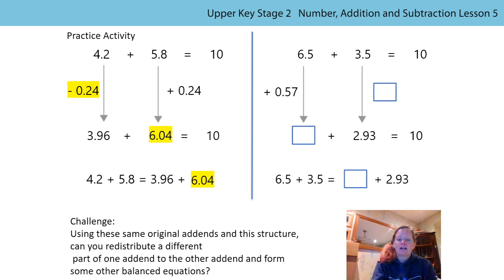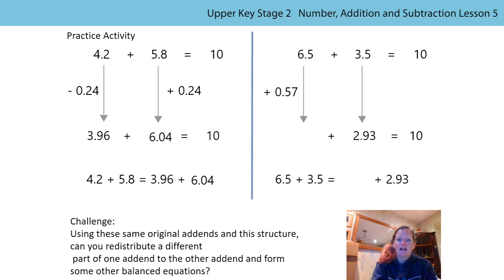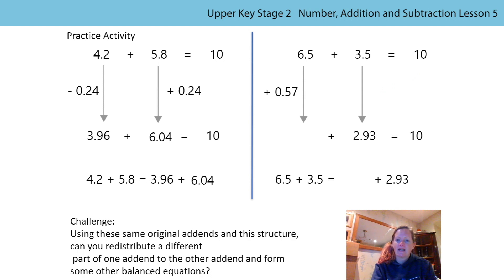So we have 6.04. We can then write out our balanced equation. If we have a look at the next question, what did you notice? That's right, we added 0.57 to one addend. So what did we have to do to the other addend to make the sum the same? That's right, we had to subtract 0.57.